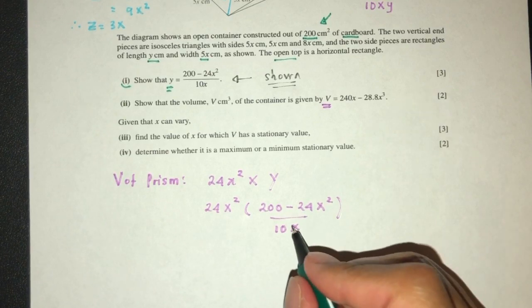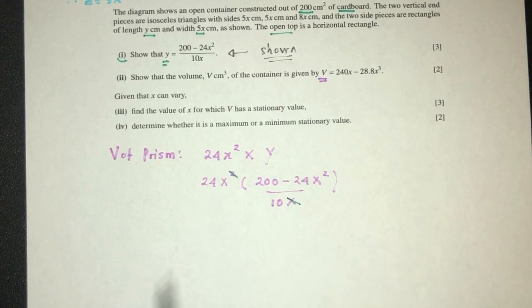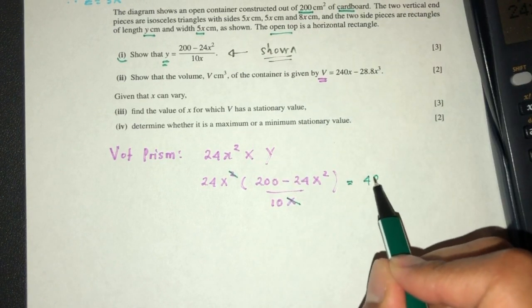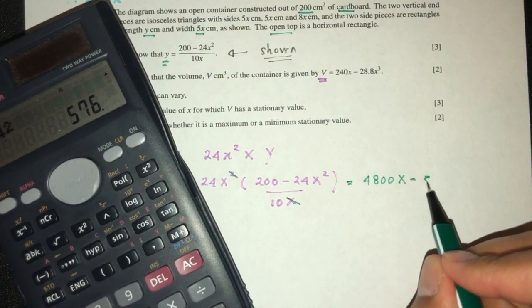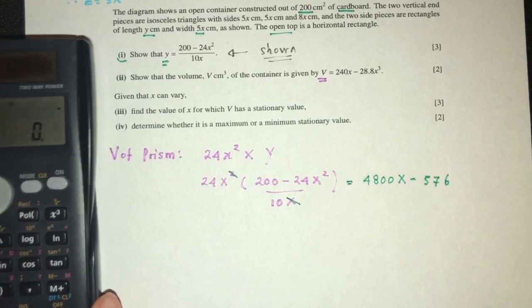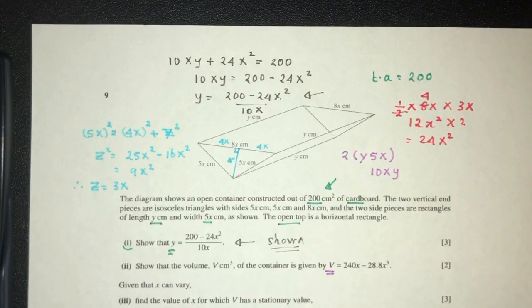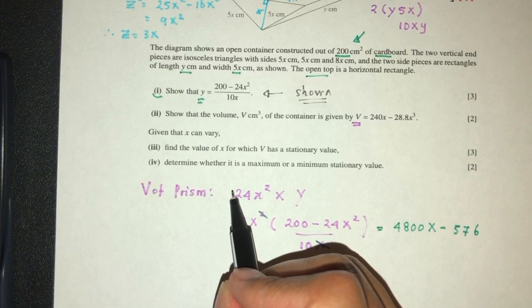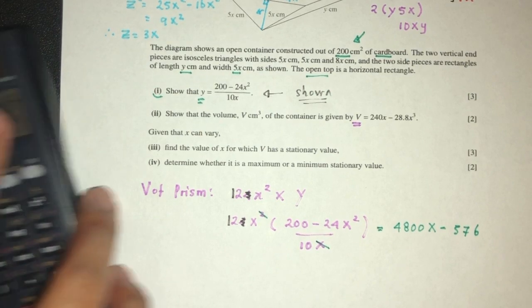That will be 24x square multiplied by y is 200 minus 24x square over 10x. So simplify, this should be 4800x minus 576. Okay, so I made a mistake here. Let me explain. The mistake I made was I took the area of both triangles. It should be just one of them. The area of the cross-surface is just 12, not 24. That's a very silly mistake.